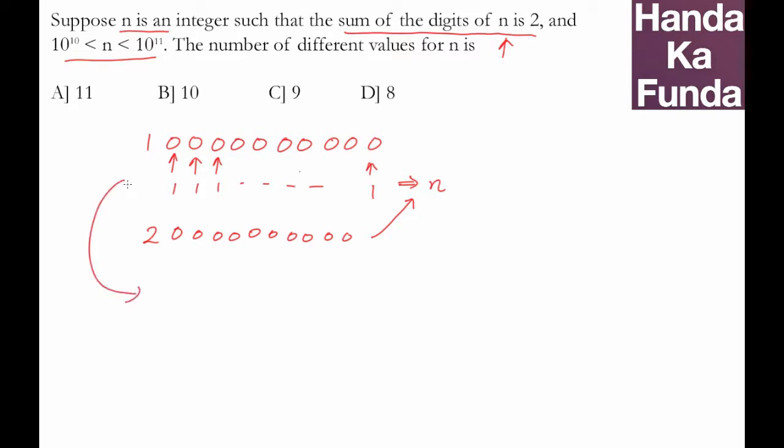There are 10 possible values of n from here where we replace any of these zeros with 1, and there is one possible value which is 2 times 10 to the power of 10. So there are effectively 11 possible values of n. We have that in the options as option A.